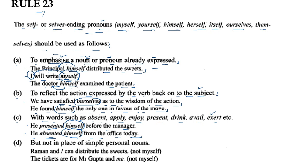Use D: A reflexive pronoun should not be used in place of simple personal nouns. When you refer to simple personal nouns — meaning people's names — we don't use reflexive pronouns with them.